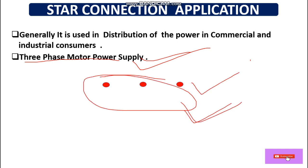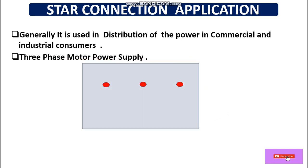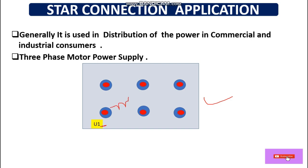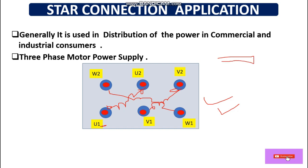Another important application is three-phase motor power supply, which is the basis of the star-delta starter. A three-phase motor terminal box always has six terminals: U1, U2, V1, V2, W1, W2. Internally the coils are terminated in a criss-cross pattern at the terminal block, with one end of each coil on one side and the other end on the other side.